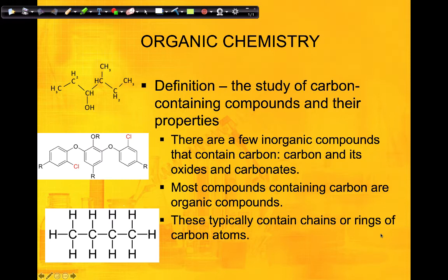Most compounds will be organic if they contain carbon. Carbon has the ability to make four bonds, which means it can make all sorts of different structures. Because of these different structures, compounds have different properties. Carbon can be found in chains or in rings.